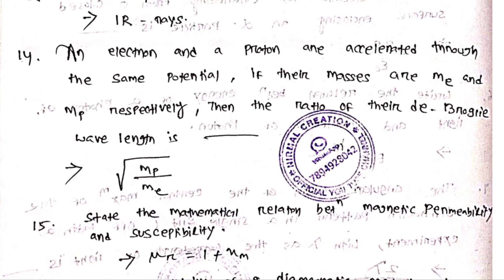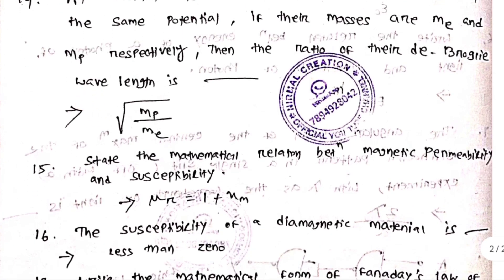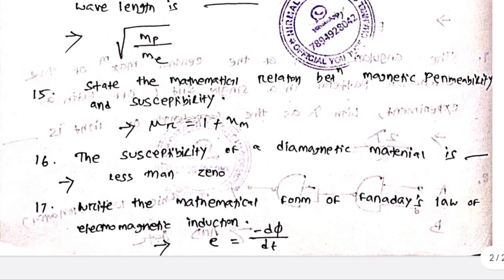If the masses of the electron and proton are Mₑ and Mₚ respectively, then the ratio of their de Broglie wavelengths is the square root of Mₚ/Mₑ. State the mathematical relation between magnetic permeability and susceptibility: μᵣ = 1 + χₘ. The susceptibility of a diamagnetic material is less than 0.